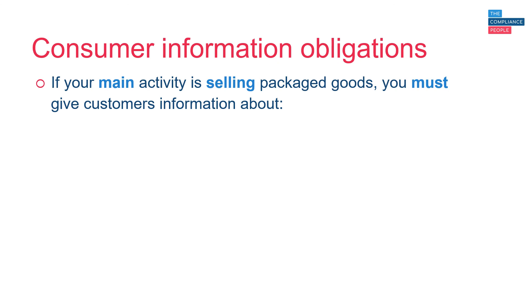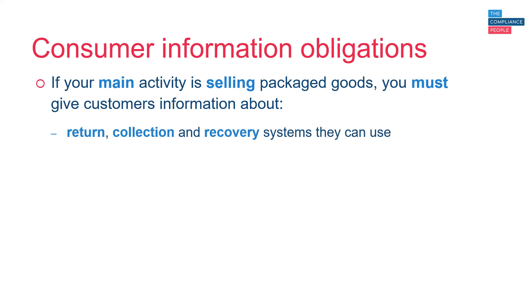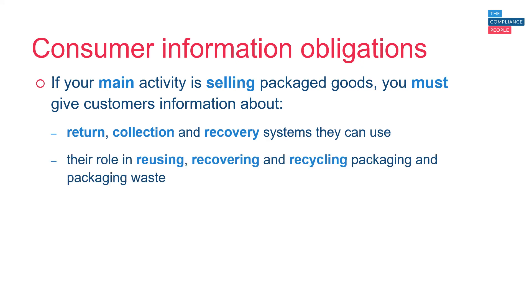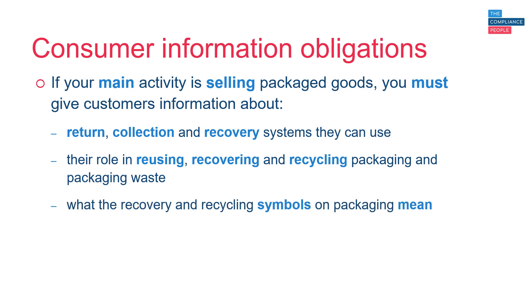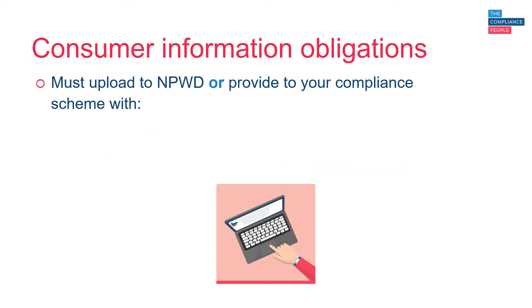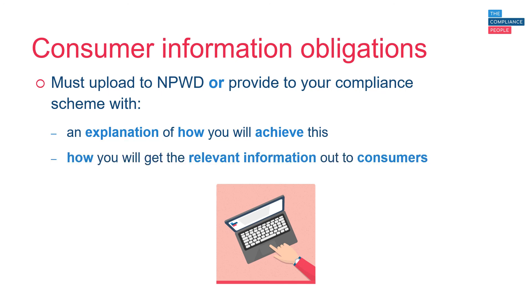Under the regulations, certain packaging producers have consumer information obligations. If your main activity is selling packaged goods, you must give customers information about: the return, collection and recovery systems they can use; their role in reusing, recovering and recycling packaging and packaging waste; what the recovery and recycling symbols on the packaging actually mean; and how they can get copies of waste strategy guidance. You must upload this information to the National Packaging Waste Database, or provide it to your compliance scheme, with an explanation of how you will get the relevant information out to consumers.